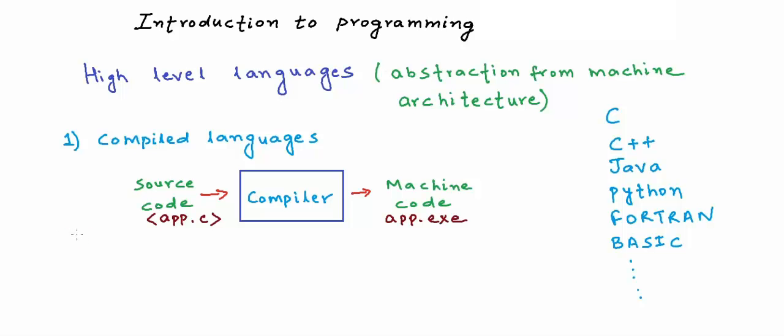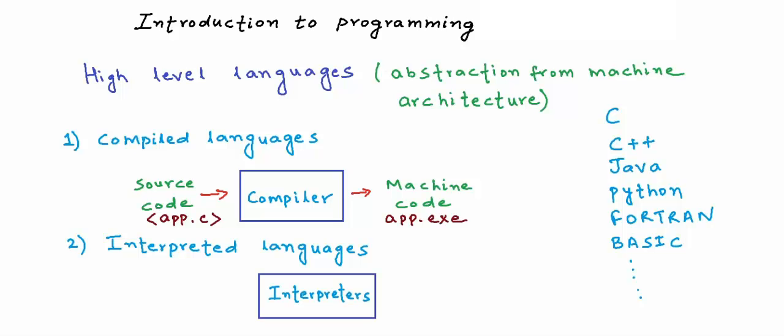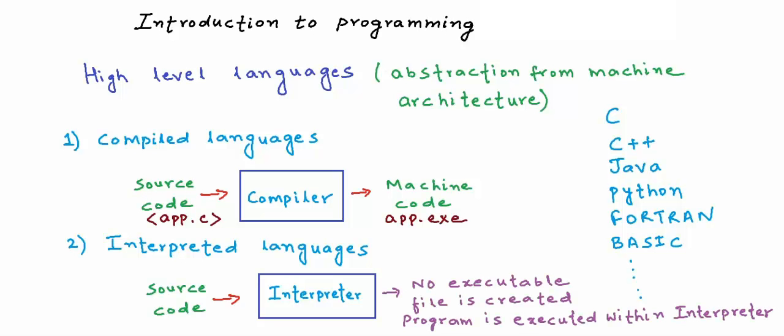There is another execution model for high level languages. Some languages are called interpreted languages. For interpreted languages, we need to use programs called interpreters. Unlike compilers, interpreters do not generate executable code that can be executed separately. An interpreter takes source code in a high level language, analyzes it, and runs it within itself. No executable file is created — the program is executed within the interpreter. Python is an interpreted language. Theoretically, any language can be compiled or interpreted, but practically languages tend to fall into one of these two categories.